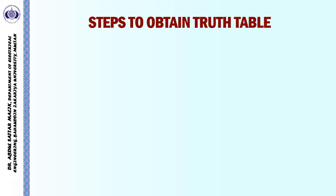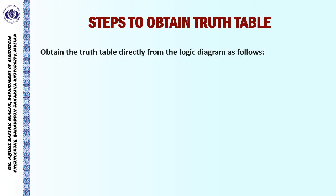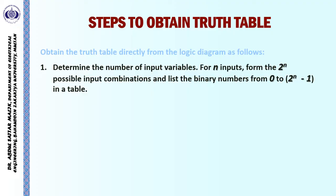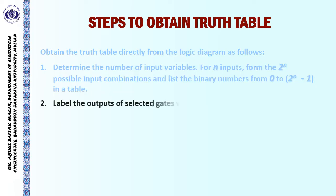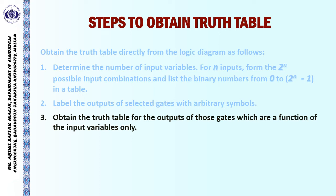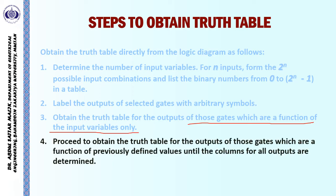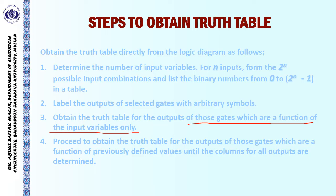Similarly, we can chalk out some steps to obtain the truth table of a given circuit. To obtain the truth table directly from the logic diagram, we proceed as follows. We determine the number of input variables and for N inputs, we form 2 raised to the power N possible input combinations and we list the binary numbers from 0 to 2 raised to the power N minus 1 in the form of a table. Next, we label the outputs of selected gates with arbitrary symbols. In the third step, we obtain the truth table for the outputs of those gates which are a function of the input variables only. And lastly, we proceed to obtain the truth table for the outputs of those gates which are a function of the previously defined values, until the columns for all outputs are determined.